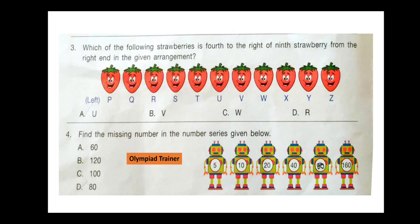Question 3. Which of the following strawberries is fourth to the right of the ninth strawberry from the right end in the given arrangement? First, find out the ninth strawberry from the right end — that is strawberry R. Now fourth to the right of R is V. So option B is the correct answer.